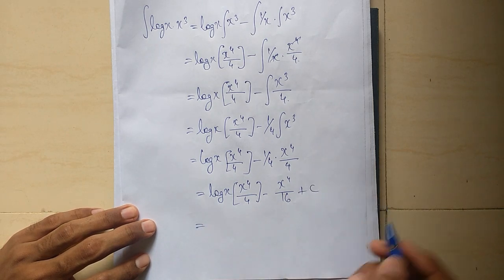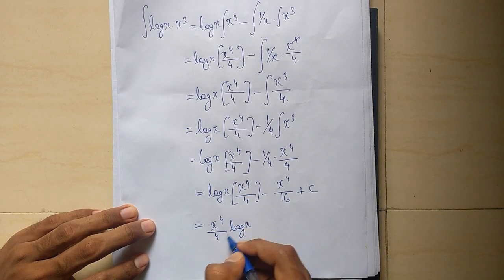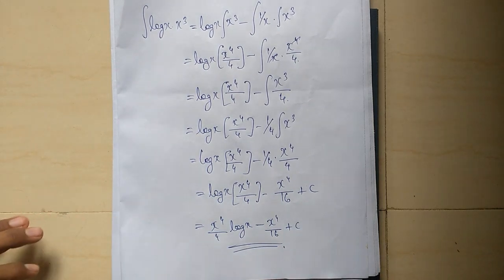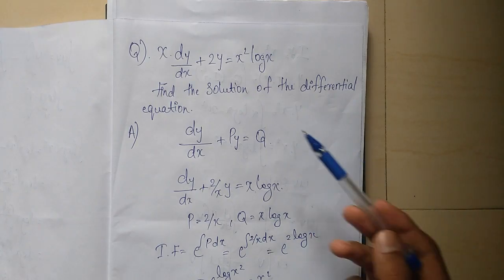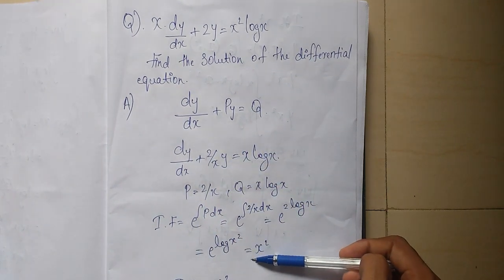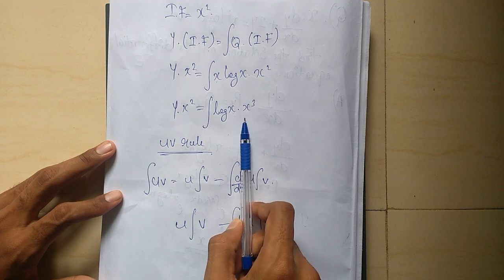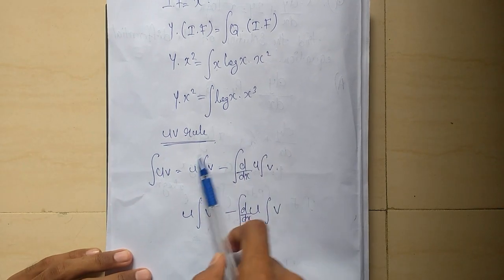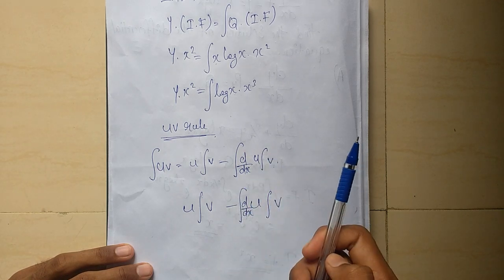So our answer is y x cubed equals log x times x raised to 4 by 4 minus x raised to 4 by 16 plus c. I explained how to do integration by parts using the simple uv method: first function into integral of second, minus integral of derivative of first into integral of second.